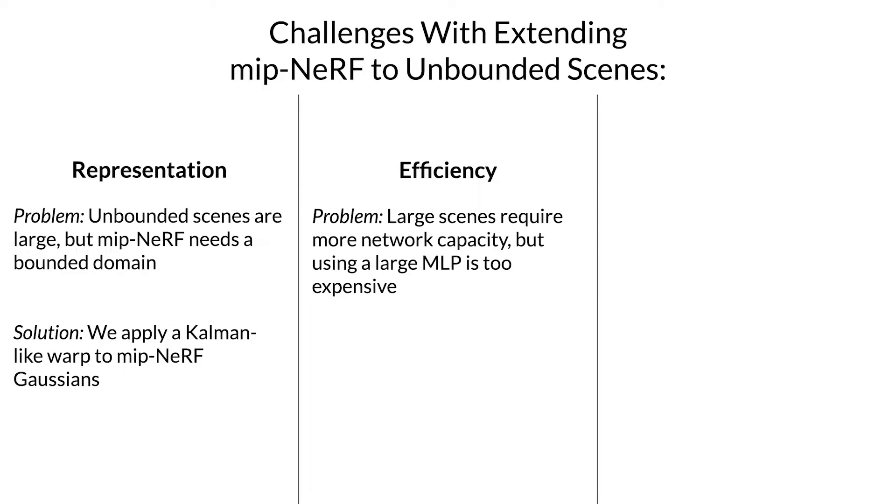The other problem with large scenes is that they're often very detailed. You can address this by making the neural network underlying MIPNERF much bigger but this makes training painfully slow. So during optimization we train a small proposal MLP to bound the geometry predicted by a large NERF MLP which makes training about three times faster.